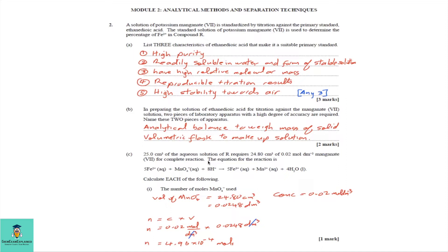We have the volume of 24.80 cm³ and the molar concentration of 0.02 moles per dm³. When doing titration questions, you must convert cm³ to dm³ simply by dividing by 1000. Using the formula moles = molar concentration × volume: 0.02 mol dm⁻³ × 0.0248 dm³ gives us 4.96 × 10⁻⁴ moles.